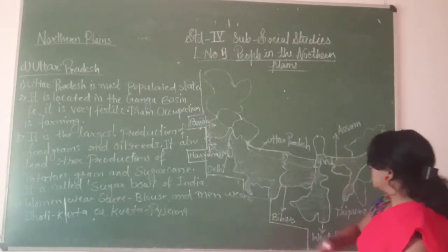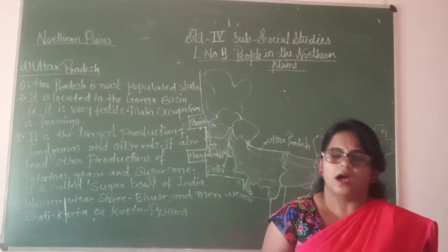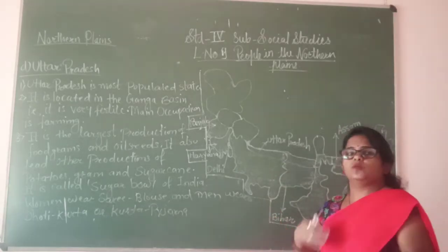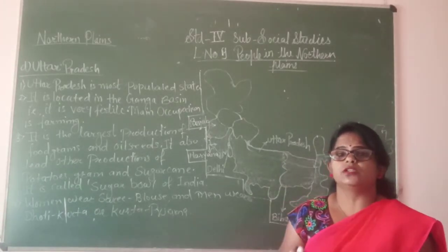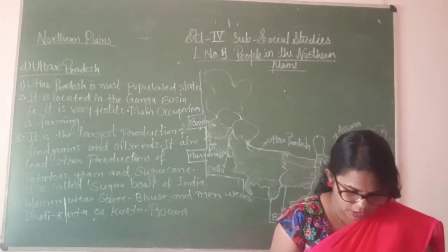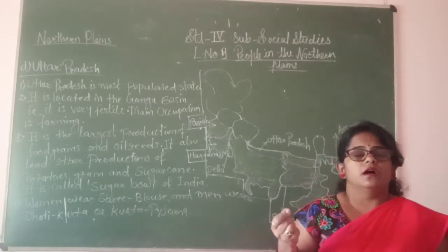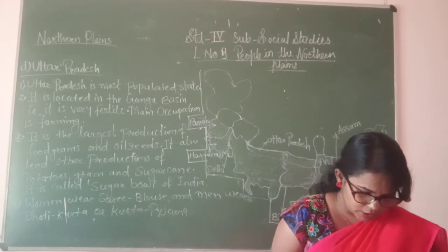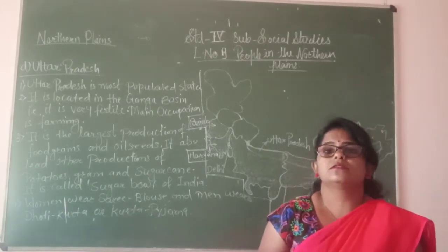The capital of Uttar Pradesh is Lucknow. Varanasi, Allahabad, Agra, Kanpur, and Meerut are also important cities. Lucknow is famous for chikankari work. Moradabad is famous for brassware, Firozabad for bangles, and Varanasi for saris.